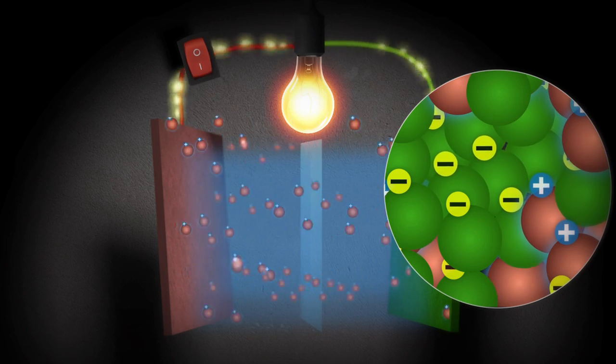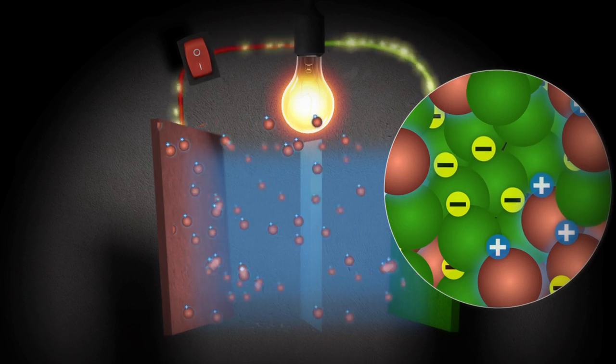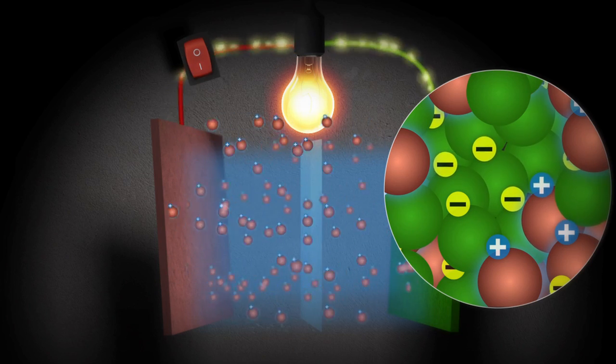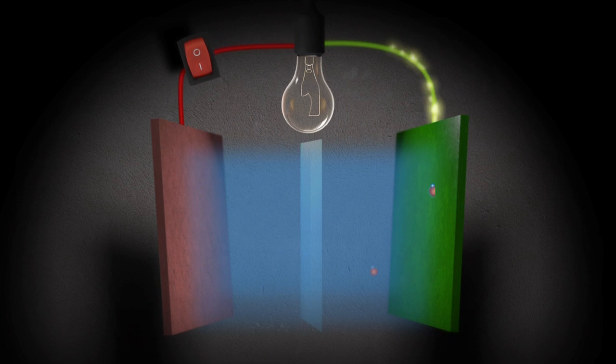So the ions have no choice but to kind of mingle with the atoms of material B. So what we've got is kind of a mishmash with B atoms mingled with A ions. As the battery discharges, electrons and ions are making their way from A to B. When you can't fit any more material A ions into material B, the battery is fully discharged.